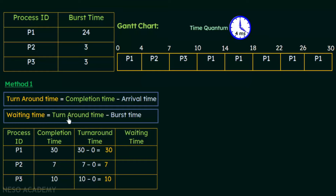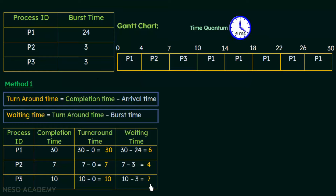Now calculating waiting times using waiting time = turnaround time − burst time: For P1, waiting time = 30 − 24 = 6 milliseconds. For P2, waiting time = 7 − 3 = 4 milliseconds. For P3, waiting time = 10 − 3 = 7 milliseconds. Use this method when you need to calculate both turnaround time and waiting time.